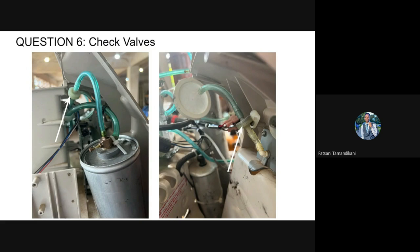A colleague shares a field experience: while assessing a concentrator in the wards, they found it reading 21% oxygen purity. Upon opening it, they discovered water had reached the sieve beds — the zeolite was wet and the filters were damaged. It is advised to add check valves to prevent both backflow of oxygen into the sieve beds and backflow of water into the concentrator.